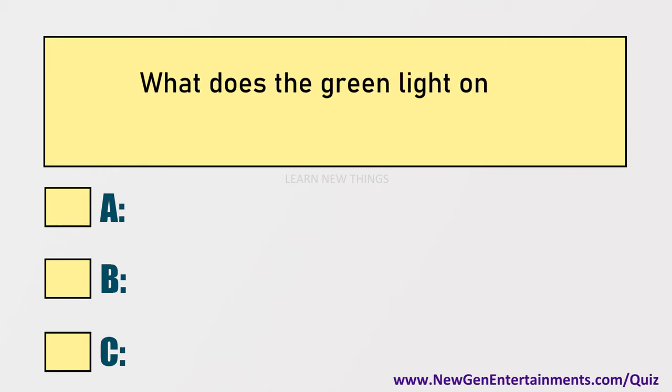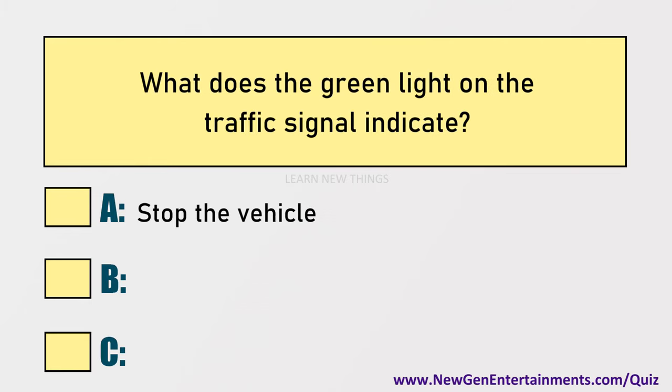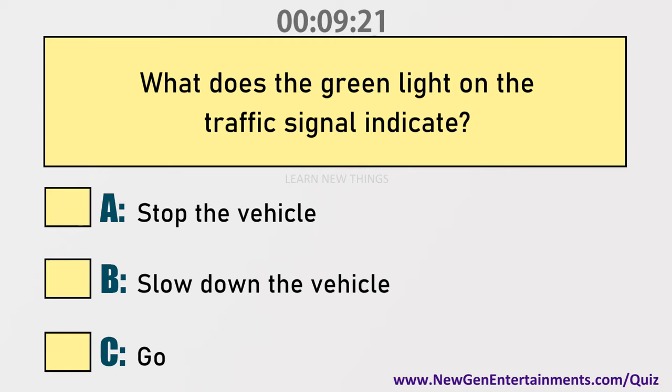What does the green light on the traffic signal indicate? Options are: A) Stop the vehicle, B) Slow down the vehicle, C) Go.